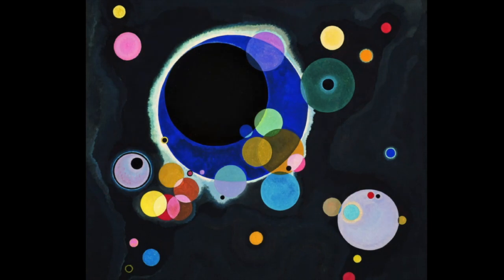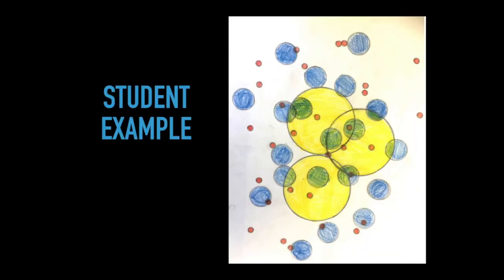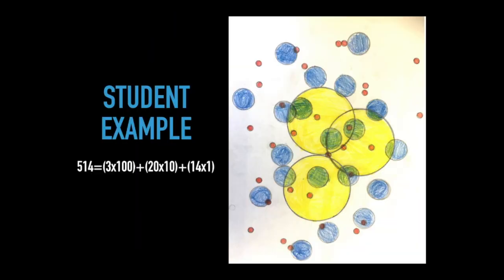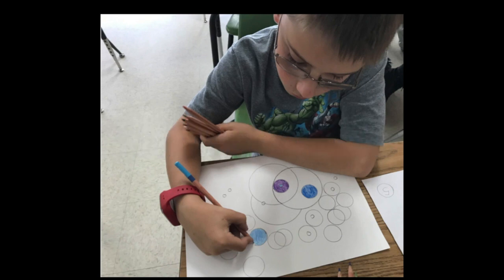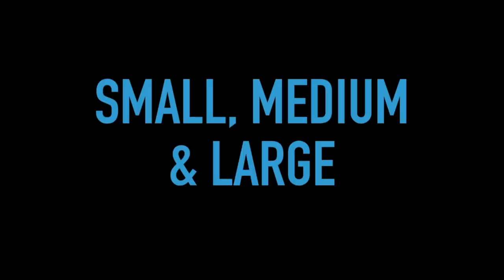When students create images for numbers, they do some creative things. Here, for example, is 514, shown as three hundreds, twenty tens, and fourteen ones. Notice how the student broke the five hundreds into three hundreds with twenty tens. This process is known in math as decomposing numbers — breaking them into smaller parts, turning a hundred into ten tens, for example. It can give you more shapes to use for your art.